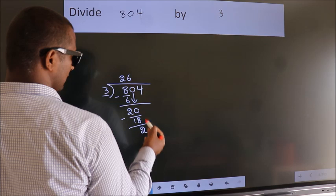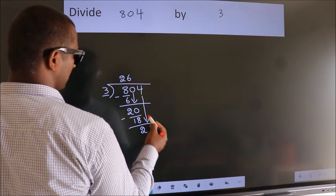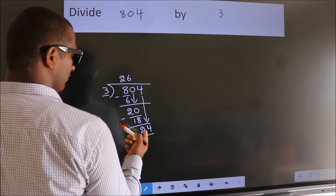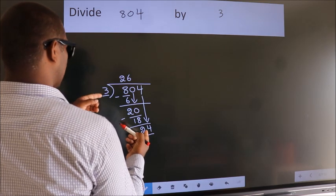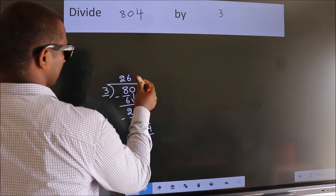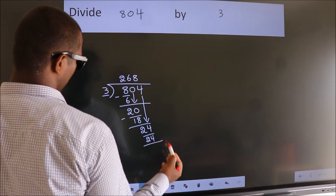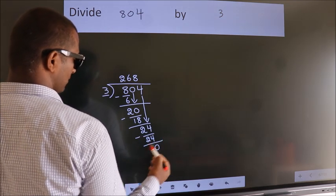After this, bring down the beside number. So 4 down, making 24. When do we get 24 in the 3 table? 3 times 8 is 24. Now we subtract. We get 0.